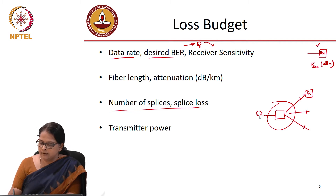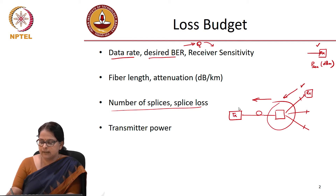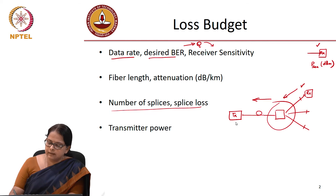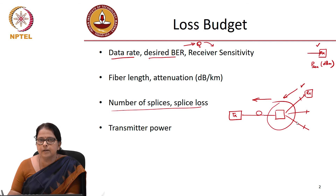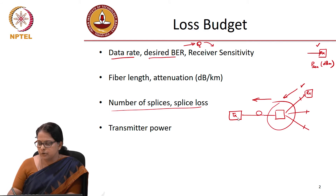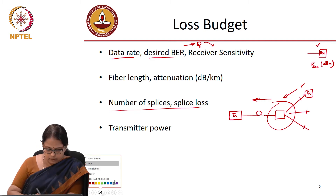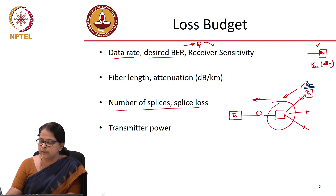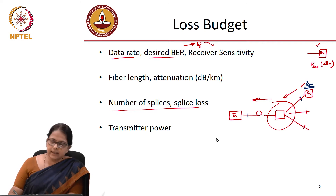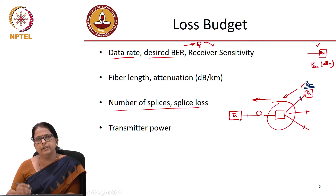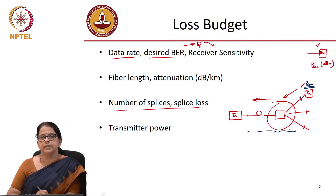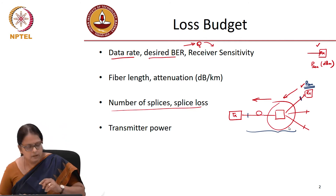Once you have the fiber length, the next is the transmitter. You start with the receiver and work backward. Either you say that you need to operate a link of, say, 100 kilometers, so you know what power is expected at the receiver — you know P_sensitivity — and given the loss budget, you know how much power is required at the transmitter. Or you say that you have a transmitter which can only operate at a certain power level, so you determine what length of fiber can be tolerated. Either way, this is how you do the loss budget.